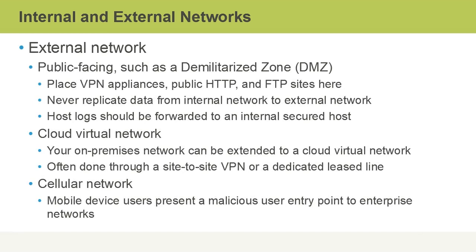External networks are public-facing, such as a demilitarized zone or a DMZ. A DMZ is either a couple of switch ports, or it could be an entire network segment that is visible to a public-facing network like the internet, but also has controlled access to an internal network. The DMZ is where you place things like VPN appliances, public HTTP, and FTP sites, because they need to be reachable from the internet.